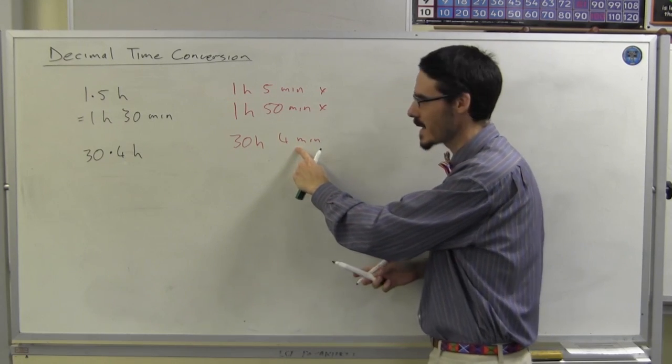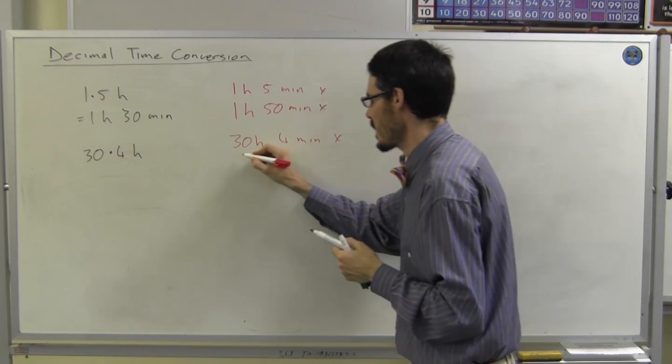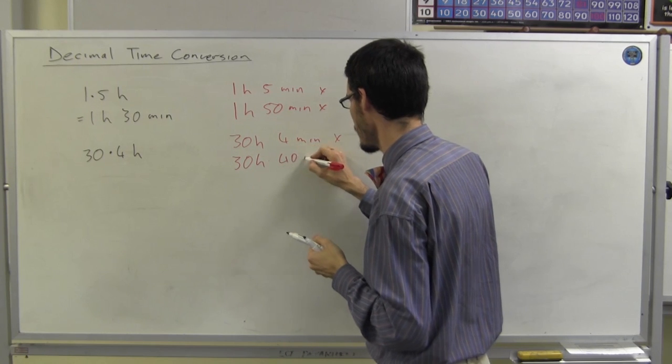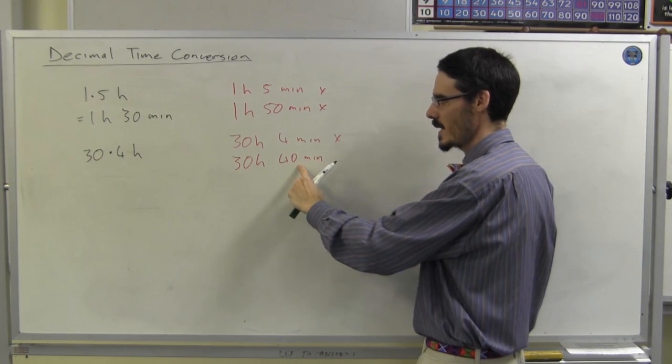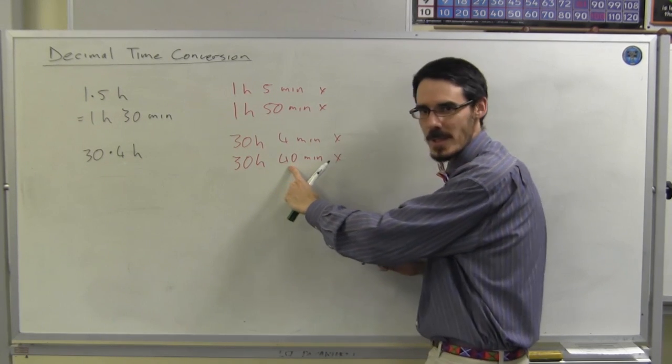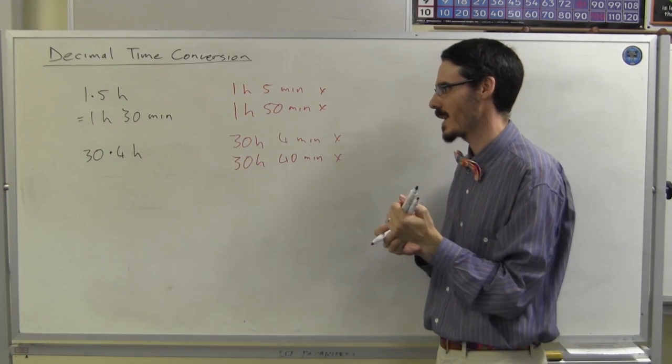This is 4 sixtieths. This is 4 tenths. Sometimes they try to tell me it's 30 hours and 40 minutes. Because they recognise this is ridiculous. And they try this. But again, no it isn't. That's 40 out of 60. This is 40 out of 100. 4 out of 10.